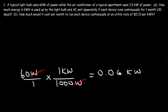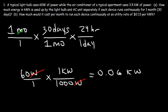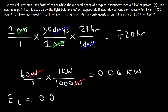Now let's calculate the energy of the light bulb running continuously for one whole month. We need to convert one month into hours. One month is about 30 days, and each day contains 24 hours, so multiply 30 by 24 to get the number of hours in a month. One month is about 720 hours. So the energy required to run the light bulb is a power of 0.06 kilowatts operated for 720 hours.